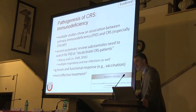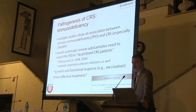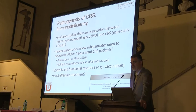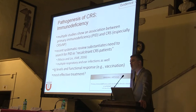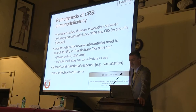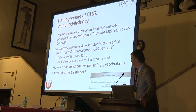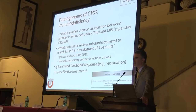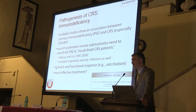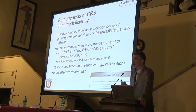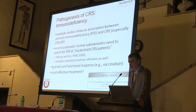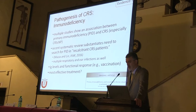Immunodeficiency is increasingly understood to play an important role. A recent systematic review substantiates the need to search for primary immunodeficiency in patients who do not improve on standard therapies — so-called recalcitrant chronic rhinosinusitis patients, who often also have multiple lung and ear infections. Patients should have at least immunoglobulin levels evaluated and a functional response such as to a tetanus vaccination assessed, though the most effective treatment — whether suppressive antibiotics or immunoglobulin therapy — is still unclear.